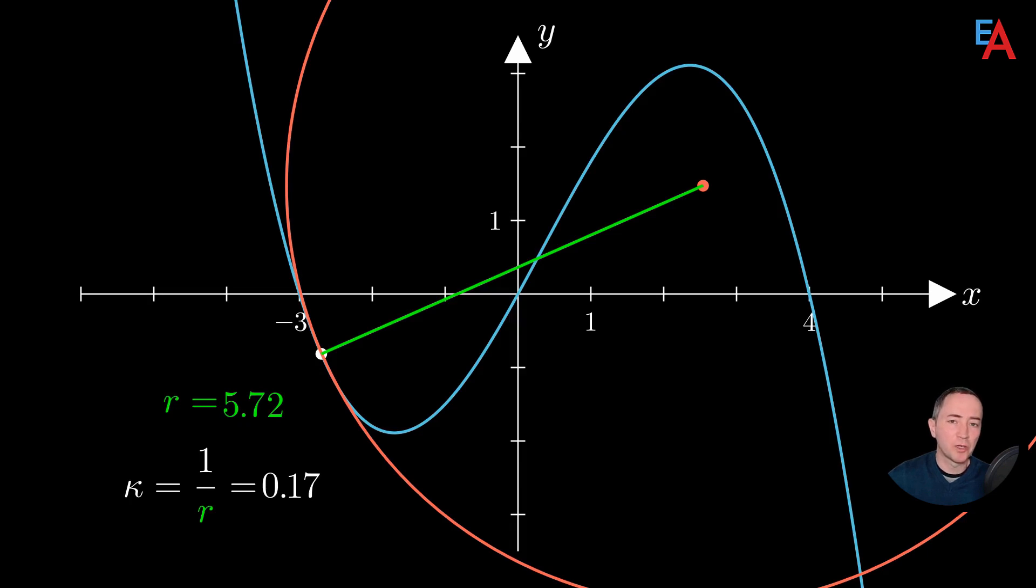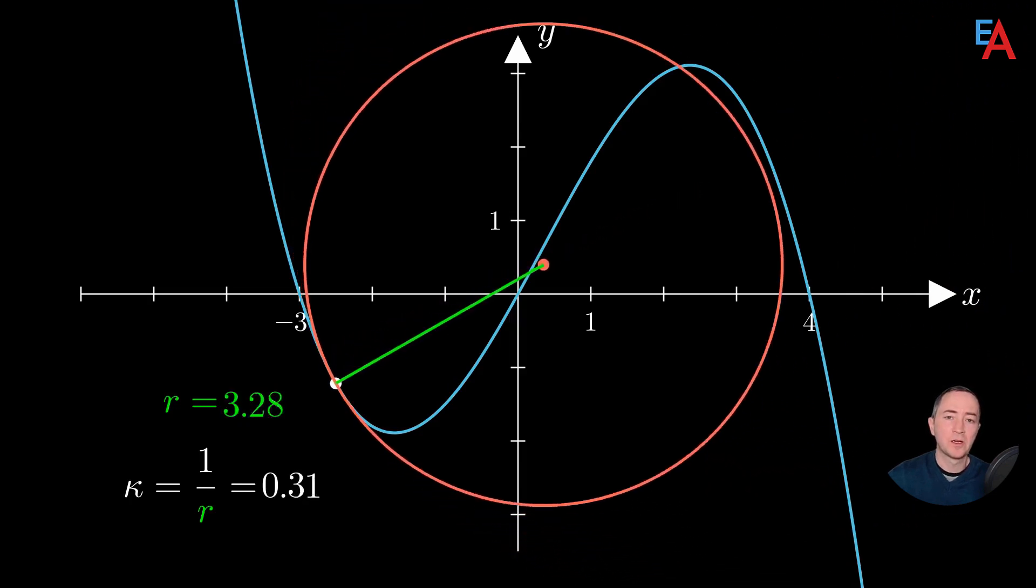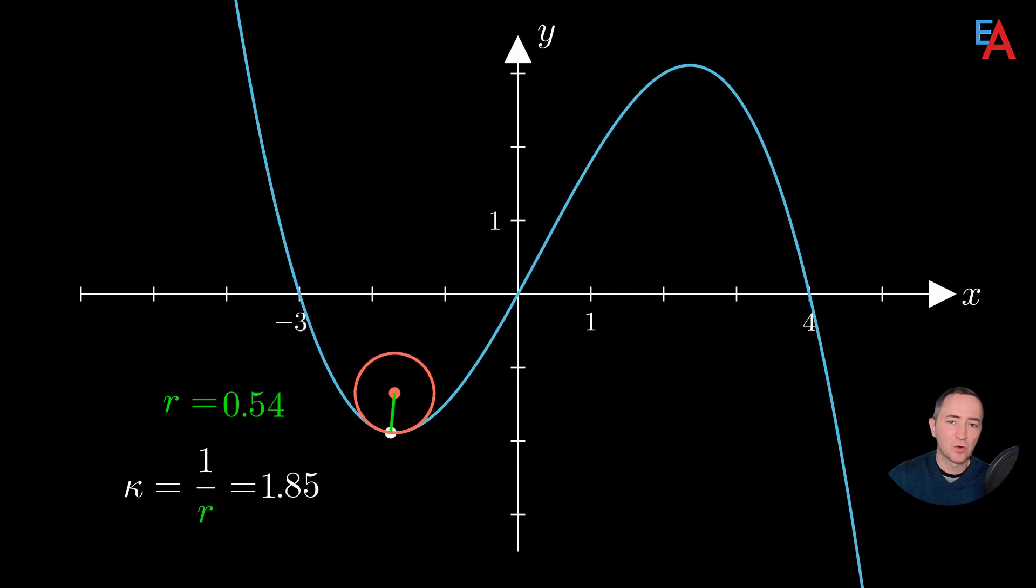When we get to the point where the curvature reaches a local maximum of 1.85, we notice that both on the left and on the right, the polynomial is on the outside of the circle. This means that the curvature decreases both on the right and on the left.